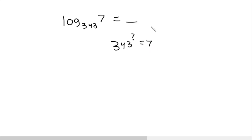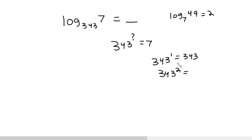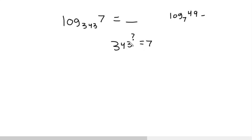One key thing I'm looking at is, before, if I had something like log base 7 of 49, it was always a whole number — it was like 2 — because this number was bigger than the base. But 343 can't be raised to 1 to get 7, and if we square this, it's going to be an even bigger number. So what must we raise it to to get 7?